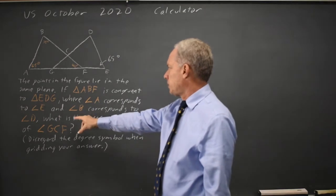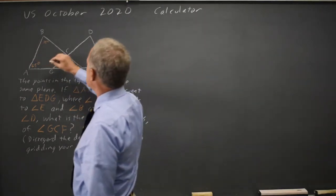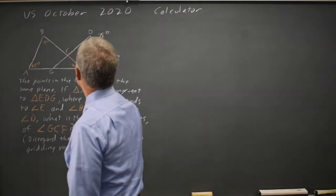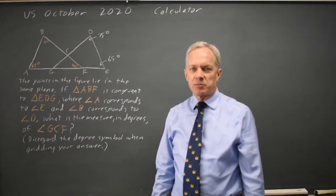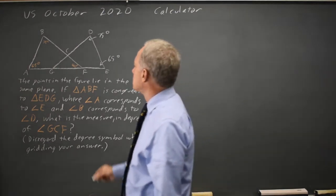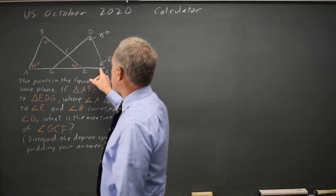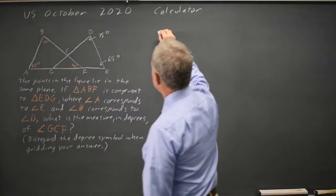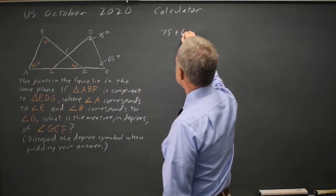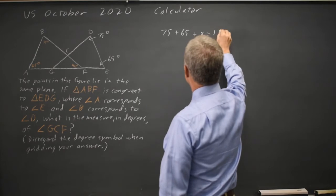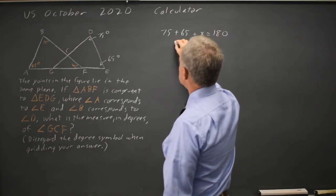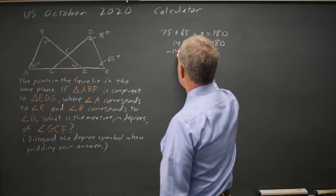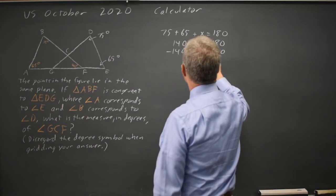Angle B corresponds to angle D. Since B is 75 degrees, angle D is also 75 degrees. Since the angles of a triangle add up to 180 degrees, angle D plus angle E plus angle DGE equals 180. So that's 75 plus 65 plus X equals 180. 75 plus 65 is 140. Subtracting 140, X equals 40.